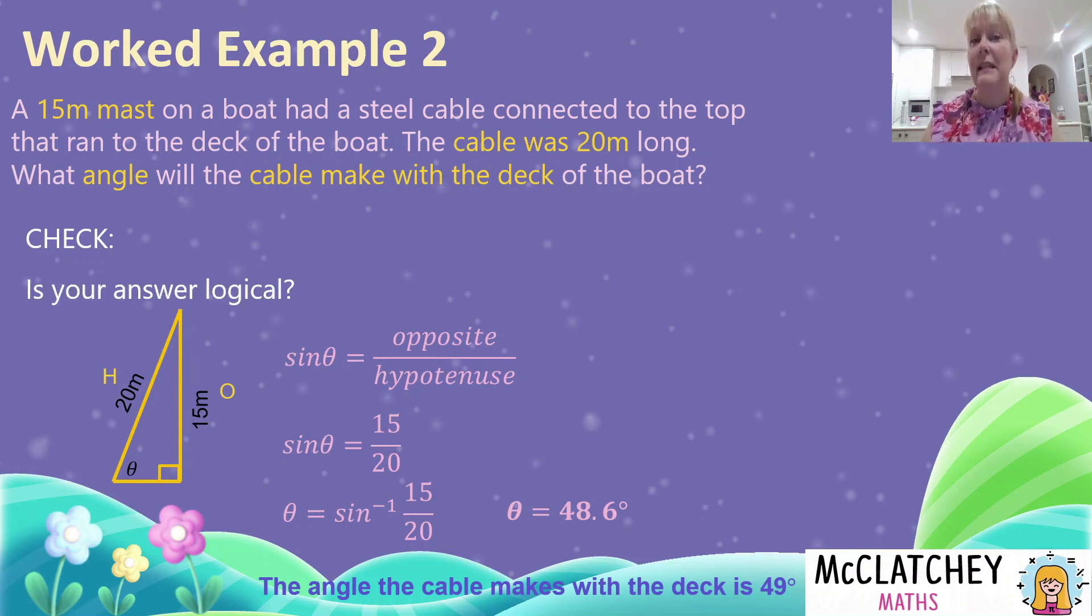Firstly, ask is your answer logical? Well, we know we've got a 90 degree angle with our triangle. So anything that's more than that is wrong. And if I get a negative number, we can't have negative angles. So that's wrong as well. So that's two little quick logic checks you can do.